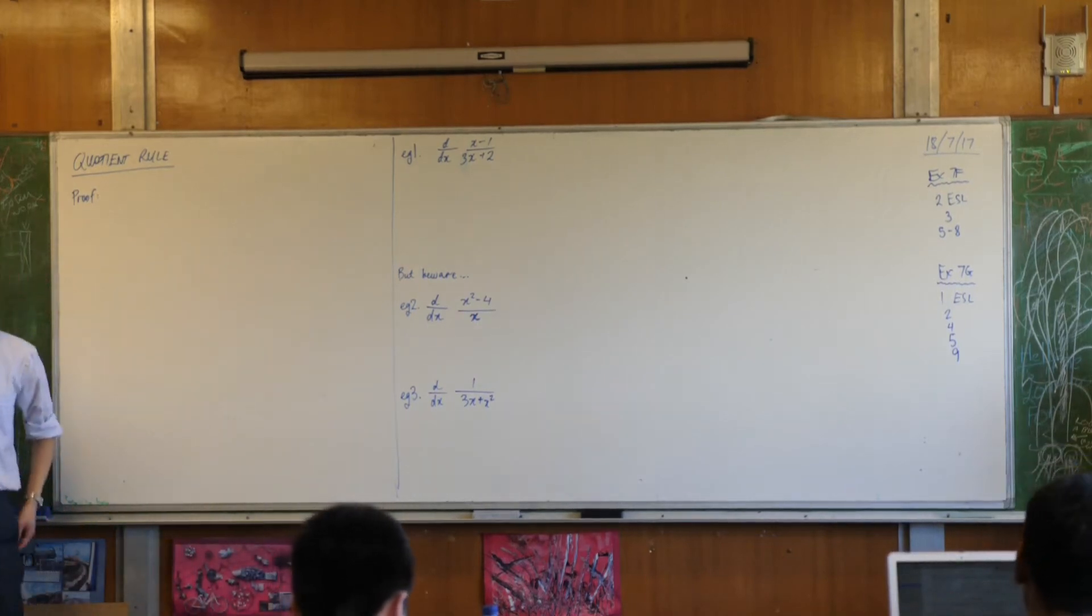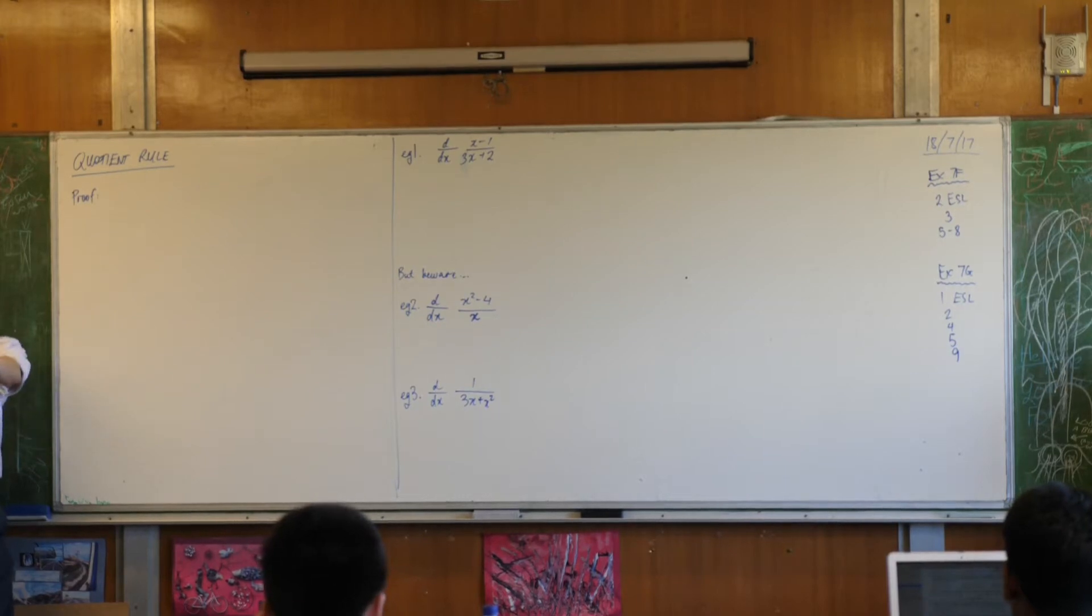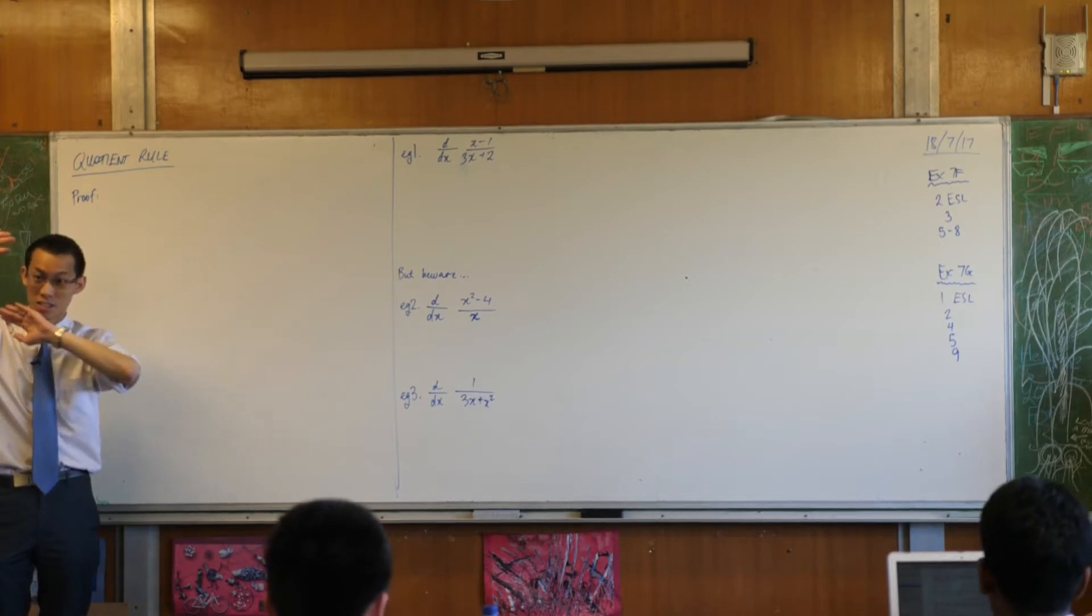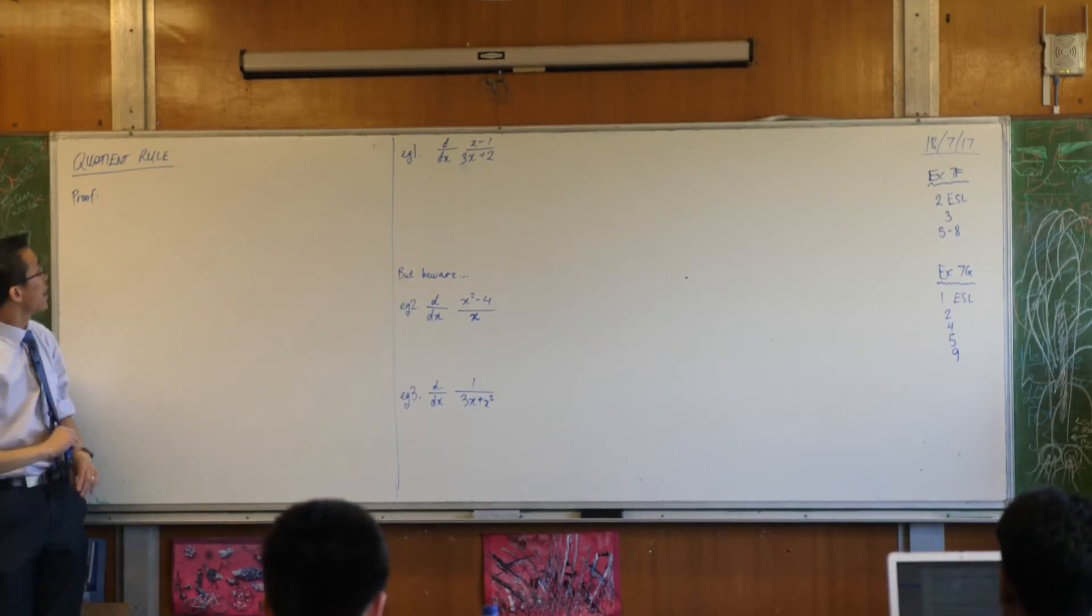The product rule was to do with differentiating things that are, as the name suggests, something times something else, right? The quotient rule is not something times something else, it's something divided by something else.